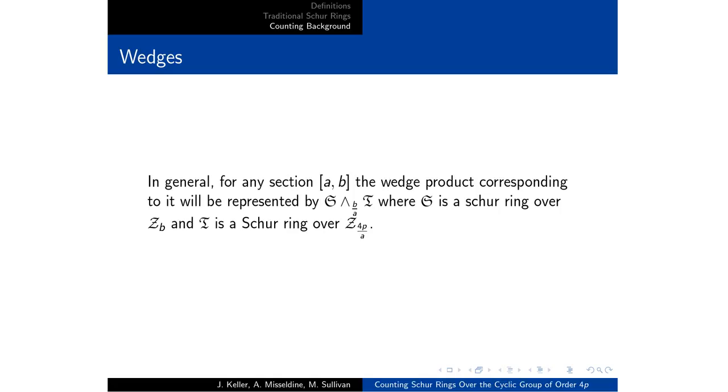So in order to enumerate these wedge products, we want to enumerate all of them without double counting. So the way we do that is we consider indecomposable left factors. If we consider decomposable left factors, then by the associativity of the wedge product, we can potentially get double counts, even if they have different representations.